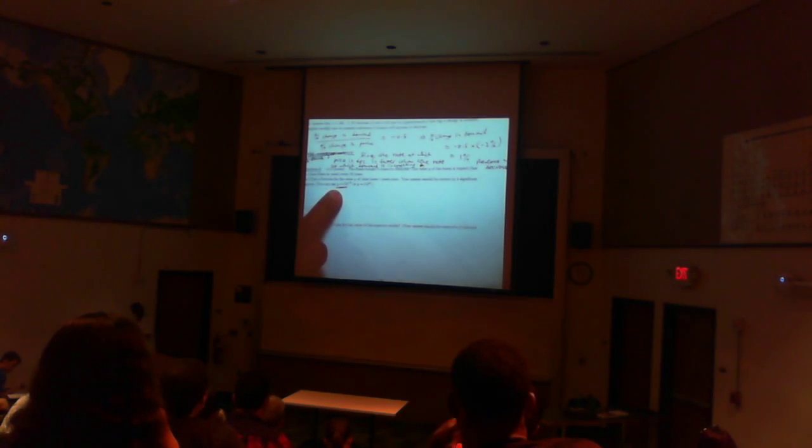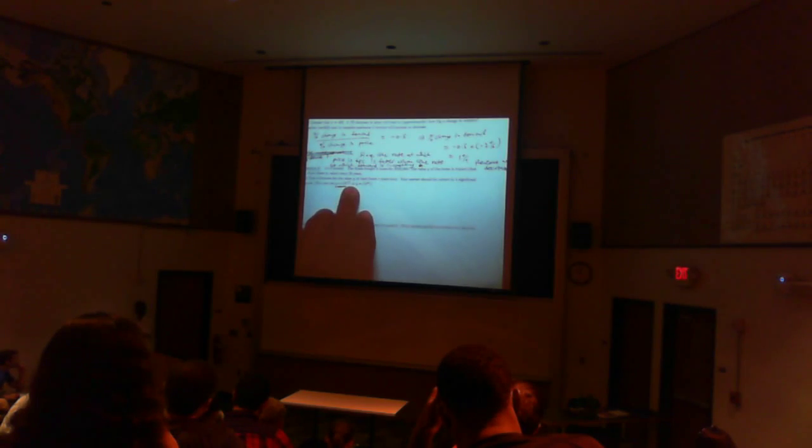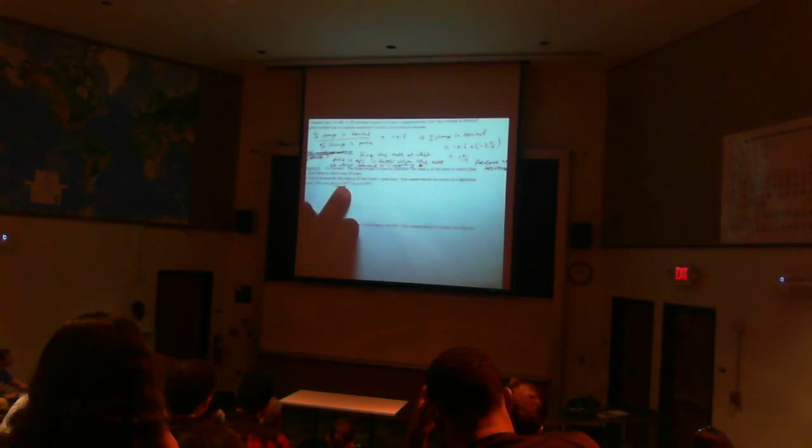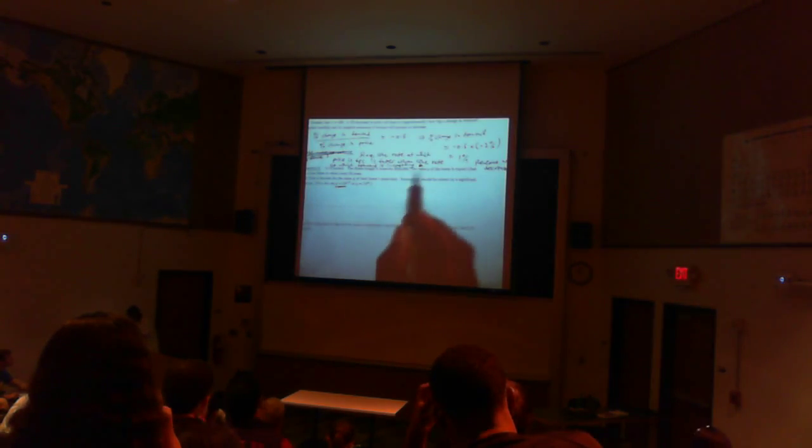You have y equals c times b to the t divided by capital T. Now capital T is called the time constant, or you can say the period. B is the growth rate. So in this question we're told that